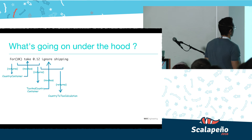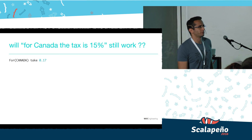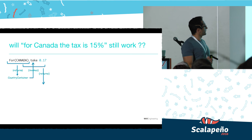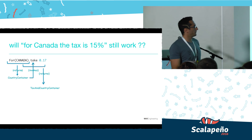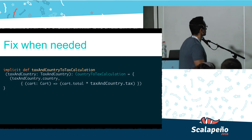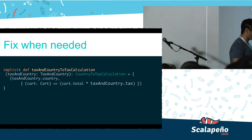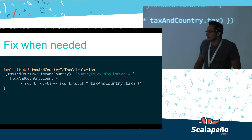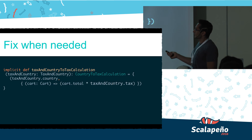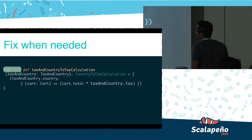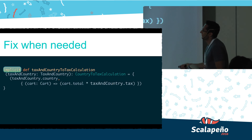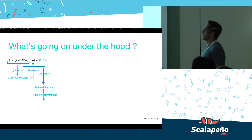But what happens to the first sentence we supported — Canada — now that we use the `TaxInCountry` container? We are left with a `TaxInCountry` container but we need a `CountryToTaxCalculation`. To fix this, we use Scala implicits: we add an implicit function `taxInCountryToTaxCalculation` that implicitly transforms from type A to type B. So the first requirement still compiles correctly via implicit conversion.